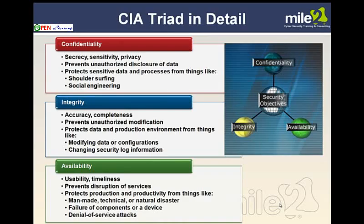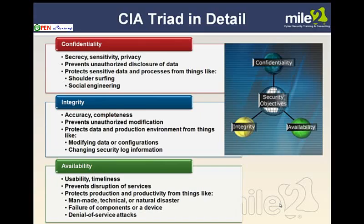A little bit more on confidentiality: secrecy, sensitivity, privacy — it prevents unauthorized disclosure of data. It protects sensitive data from things like shoulder surfing, where a bad guy is looking over your shoulder watching what you type or looking at your screen. Preventative measures include paying attention to who's near you, or having a screen filter. Social engineering — people can try to manipulate another person by being friendly, or through general manipulation, intimidation, or email to get information they should not have given up. Really, encryption is super popular for confidentiality, seen in virtual private networks.